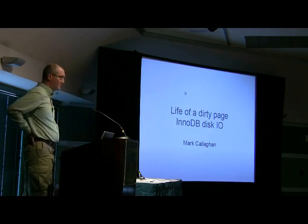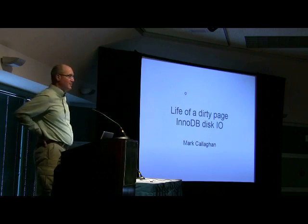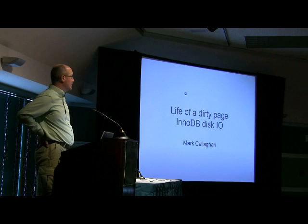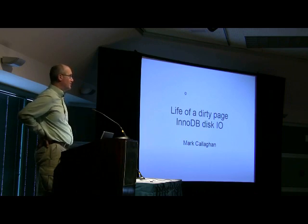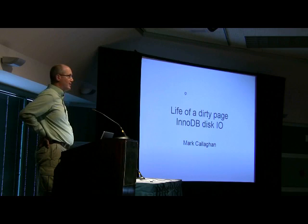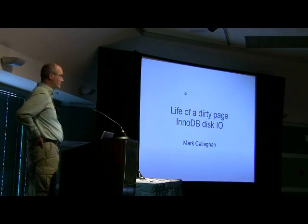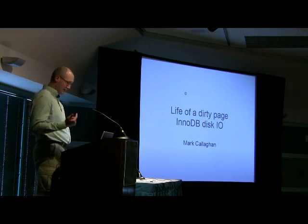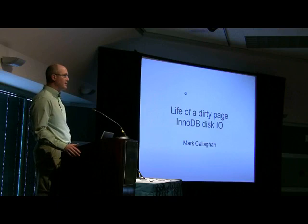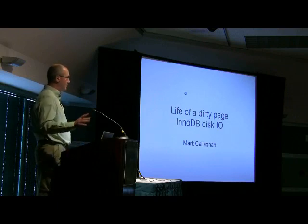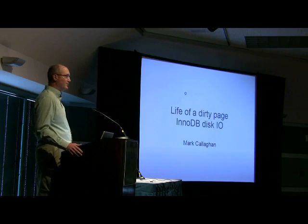A lot of focus in the past year has been put on the SMP performance issues with InnoDB, and a lot of progress was made. Only recently, Percona has moved on to looking at IO performance issues, and then eventually IBM looking at them too. There are some problems there, and some opportunities. The improvements are pretty easy to get. I'll be describing what I call the IO architecture, or the background IO architecture, from the perspective of how a dirty page moves through the system.